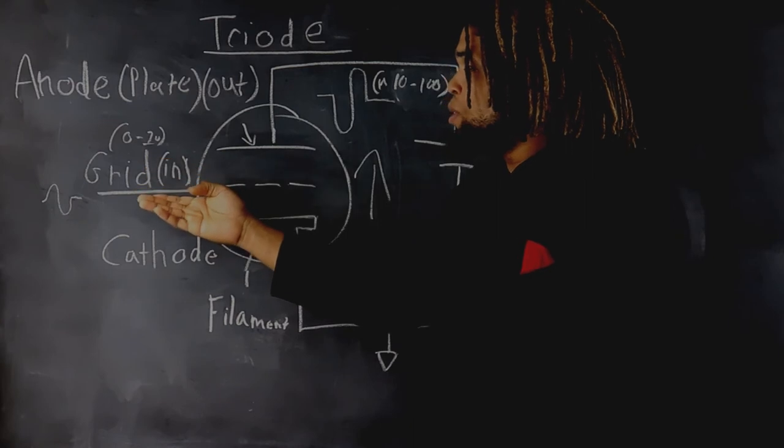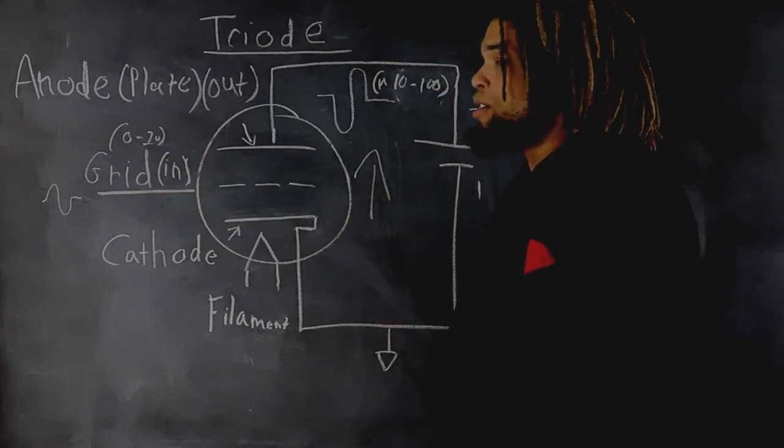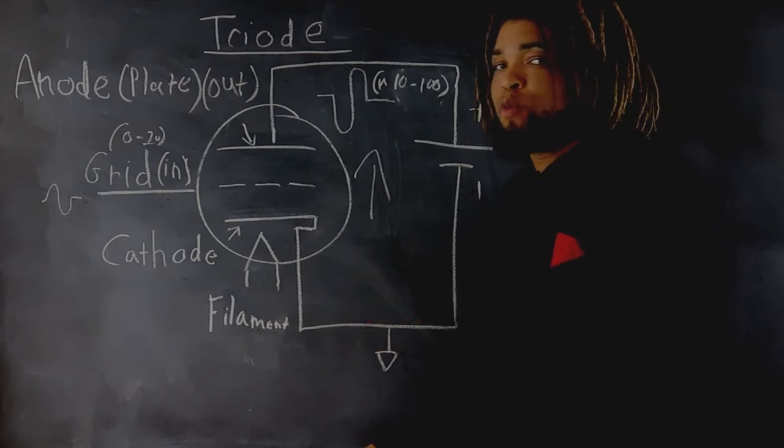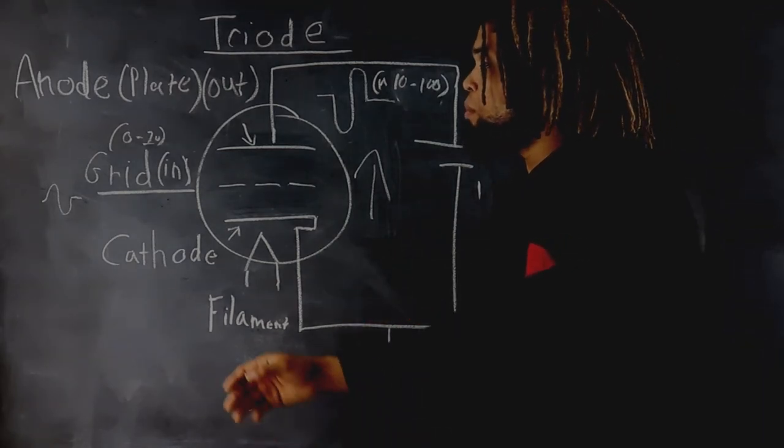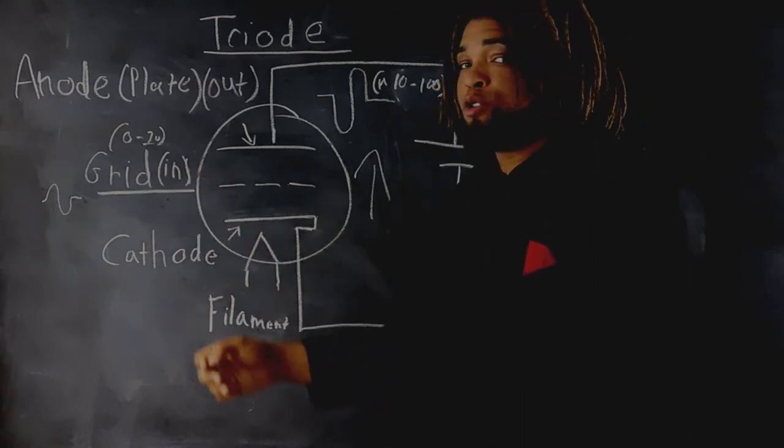A vacuum tube normally has an amplification factor of between 10 and 100. The signal coming into the grid, which is usually very small...